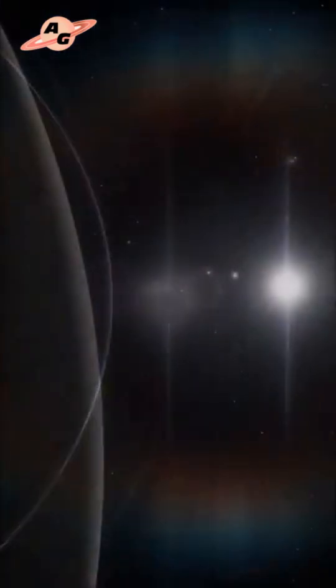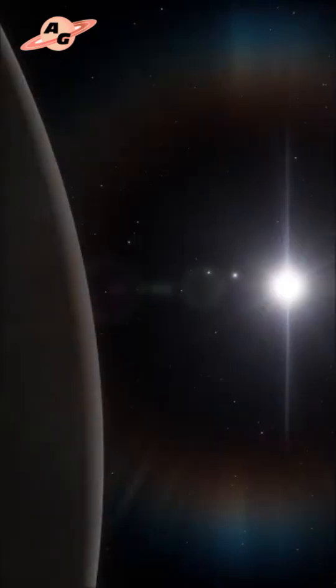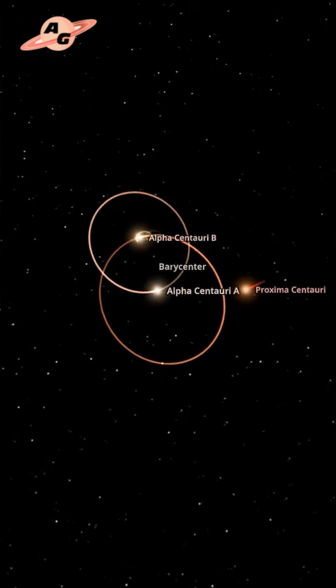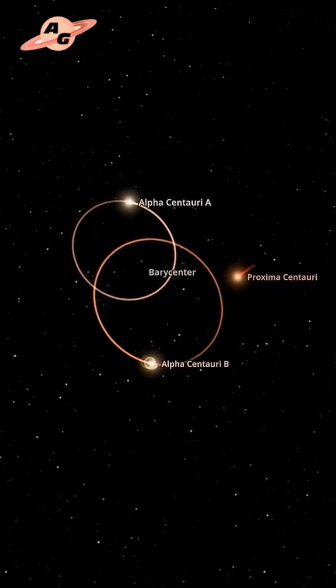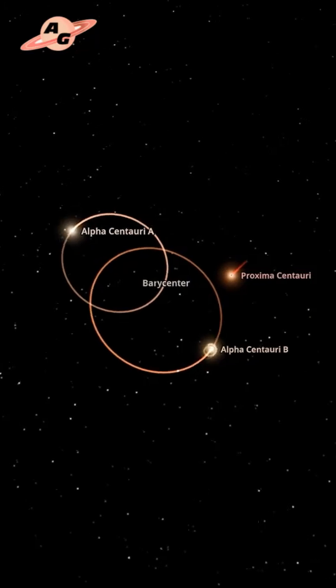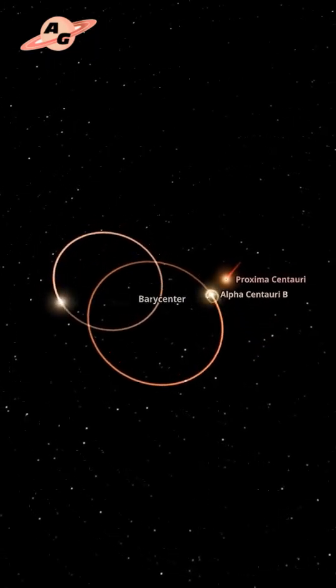As a result, astronomers discovered a possible new exoplanet near the star Alpha Centauri A. This is one of the closest stars to the Sun, part of the triple star system Alpha Centauri, located just 4.3 light-years from Earth.